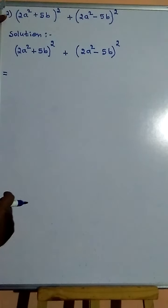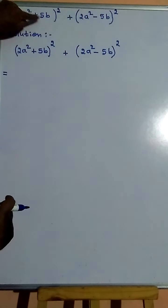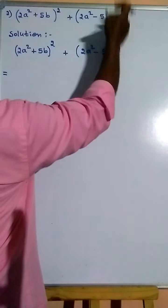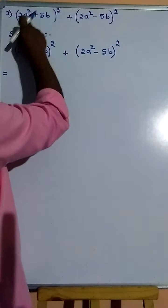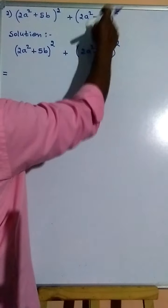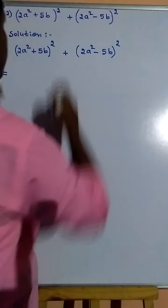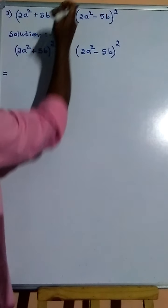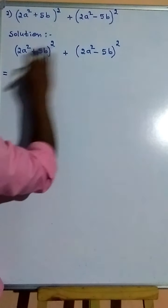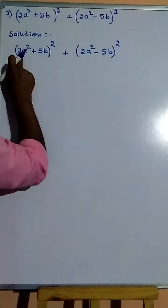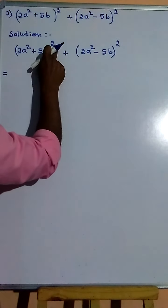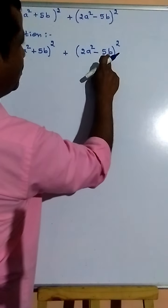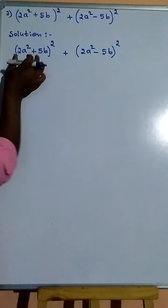Second problem: (2a² + 5b) whole square plus (2a² - 5b) whole square. This uses the (a + b) whole square and (a - b) whole square identities. This first part is the (a + b) whole square formula, and this second part is the (a - b) whole square formula.